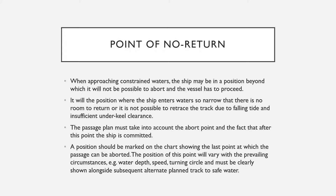In this case, the passage plan must take into account the abort point, and the fact that after this point the ship is committed — that becomes the point of no return. The abort point is the maximum point up to which the ship can proceed and make any changes to the passage plan. After the abort point comes the point of no return, after which the ship cannot come back to its original track. Whatever changes need to be made must be made before the abort point.